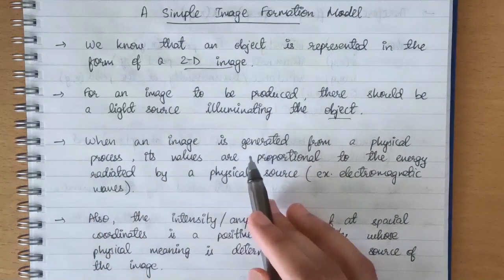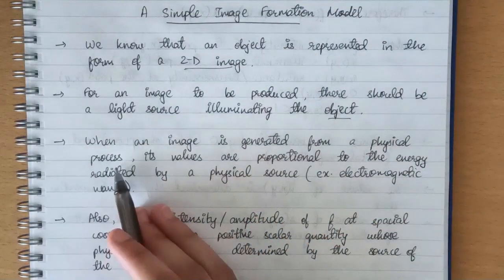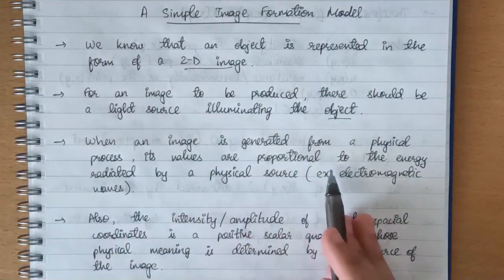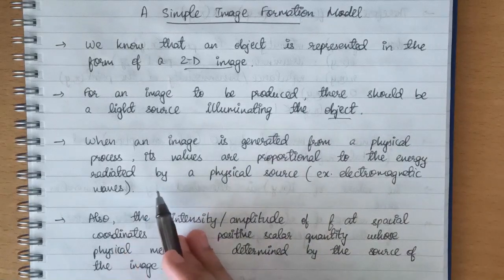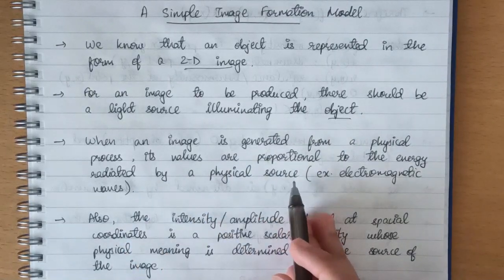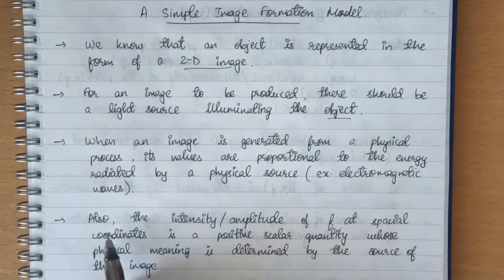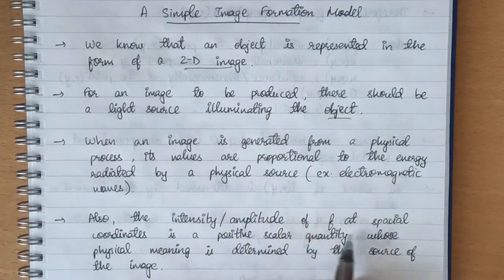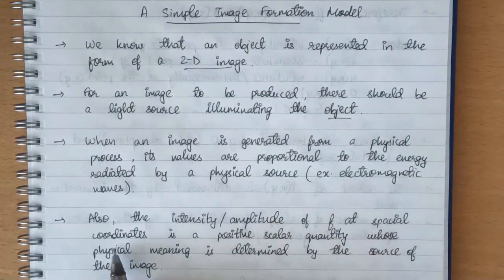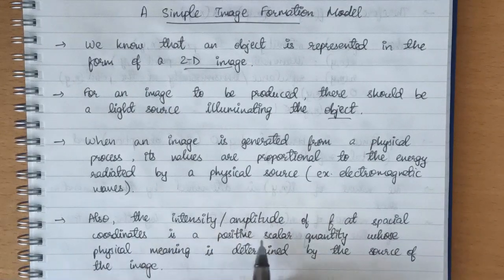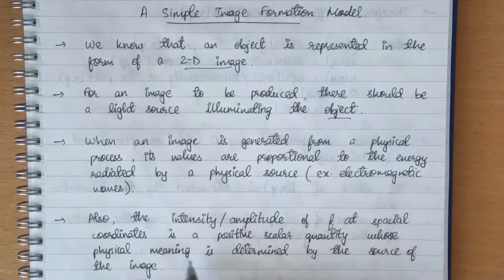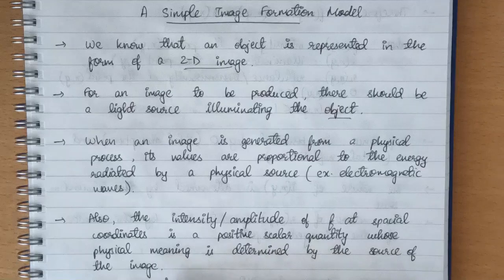When an image is generated from a physical process, its values are proportional to the energy radiated by a physical source. Also, the intensity or amplitude of f at spatial coordinates is a positive scalar quantity whose physical meaning is determined by the source of the image.